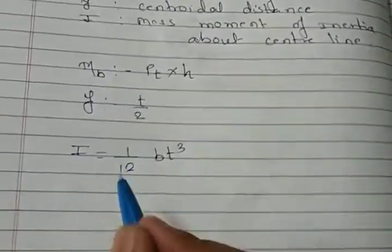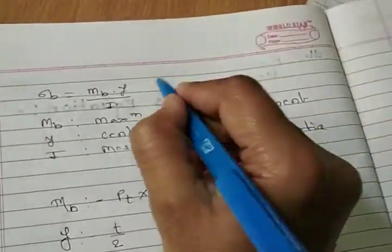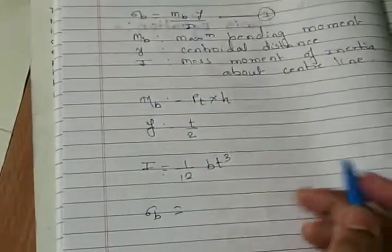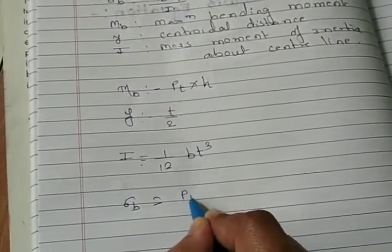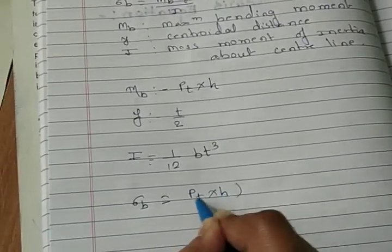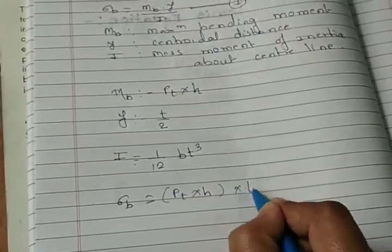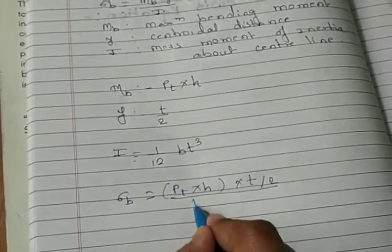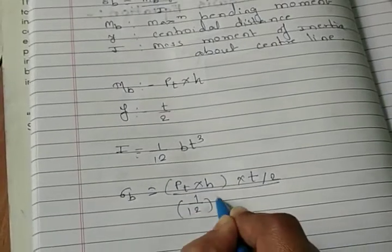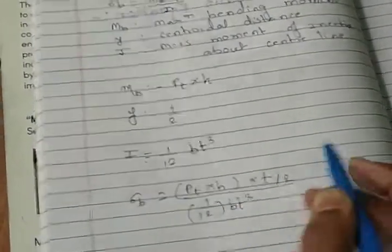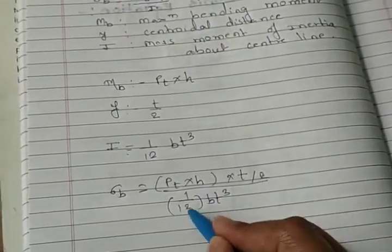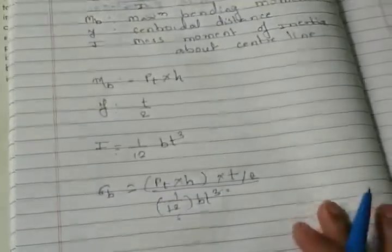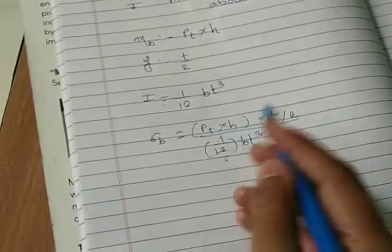So let's put all this value in equation 1. Sigma b is equal to mb is nothing but bt into h, y is t by 2 divided by i is 1 upon 12 bt cube. So this 2 cancel with this, so here is the 6. T cancel with this 3, so here is the 2.